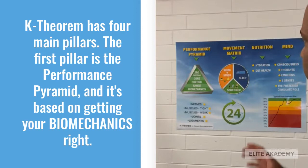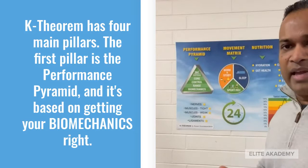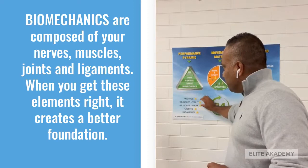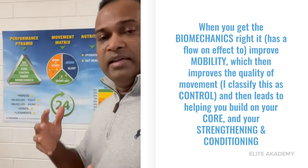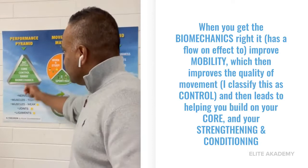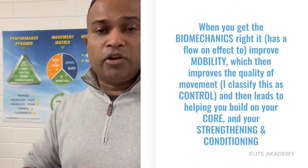The first pillar is the performance pyramid. The performance pyramid is based on getting your biomechanics right. Mechanics are composed of your nerves, muscles, joints, and ligaments. When you get these elements right, it creates a better foundation. When you get the biomechanics right, it improves mobility, which improves the quality of motion — classified as control — and then leads to helping you build on your core, strengthening and conditioning.